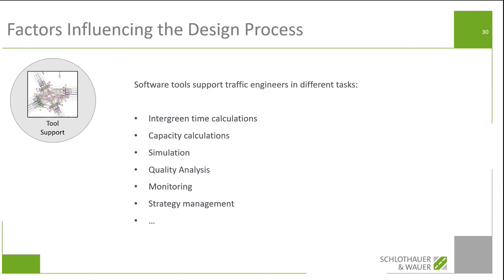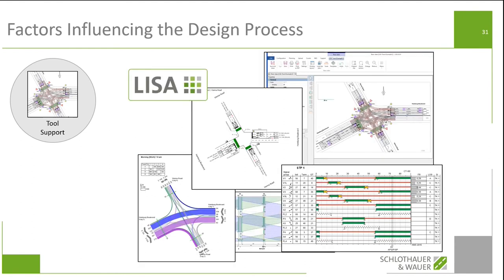Software tools support traffic engineers in different tasks: intergreen time calculation, capacity calculation, simulation, quality analysis, monitoring of traffic, and strategy management. This would not be a Schlothauer presentation without mentioning LISA. LISA integrates most of these tasks: software-based intergreen time calculation, capacity calculations, automated signal timing plan calculations, coordination, developing traffic actuated controls, simulation or interfacing with simulation tools, and uploading the control directly to the controller. LISA does about 80% of the jobs listed here. It's not a central tool — if you want to see how your control performs, you still need a central and a quality analysis tool, but you could use MyCity Analytics for that with an integration.